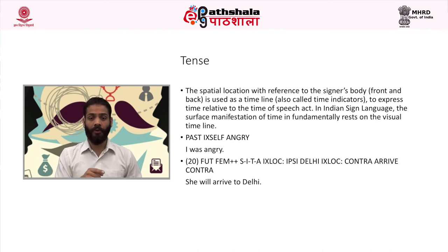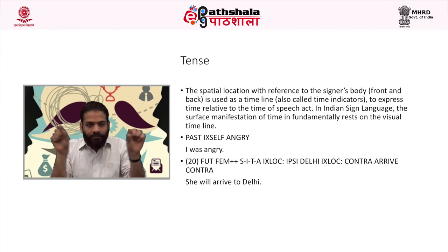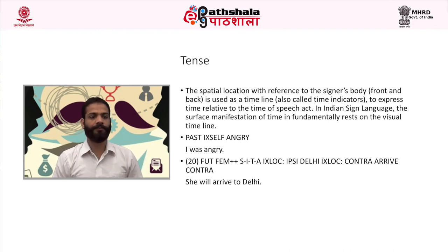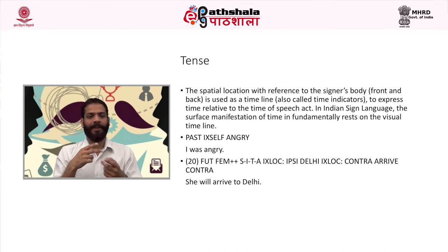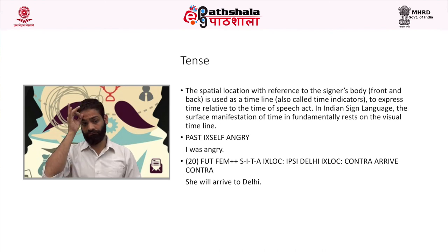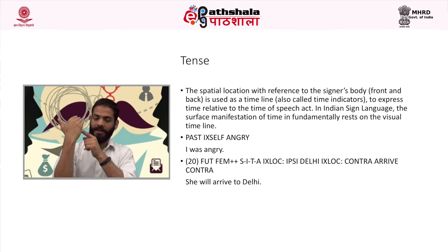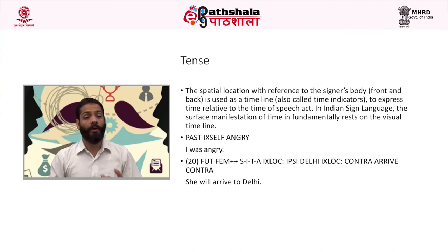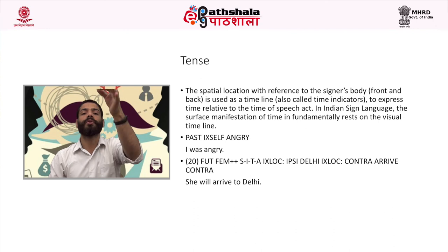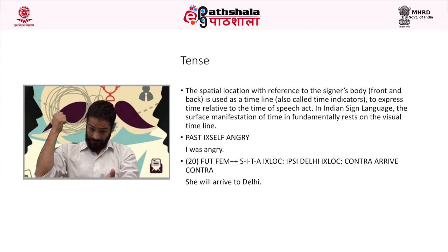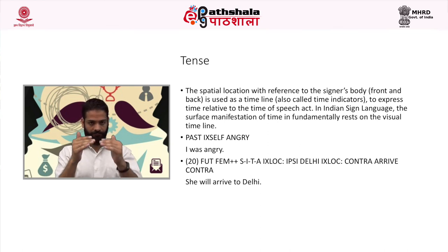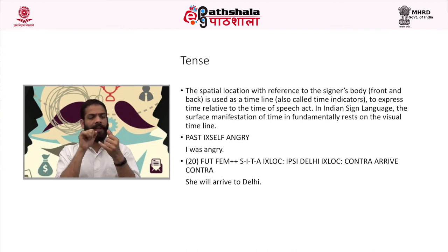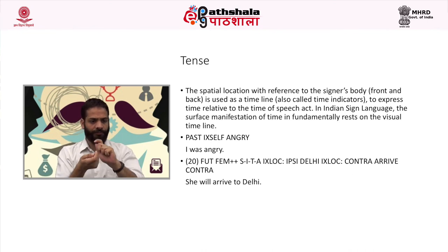In Indian Sign Language, present tense is unmarked — there is no overt marking for it. For example, 'I like you' does not have any tense marker for the present. For past and future, though articulated with the same handshape, they have different formational parameters — for past, we sign towards backwards; for future, we sign towards forward. For example: 'I was angry' → past, I, angry. And 'she'll arrive to Delhi' → future, she (Sita), Delhi, arrive.